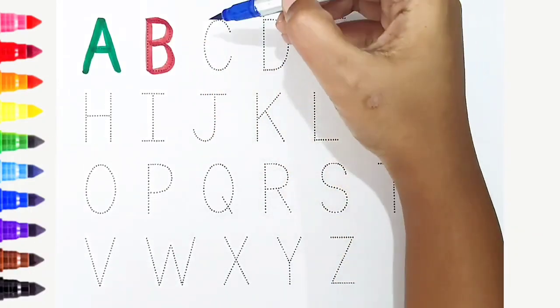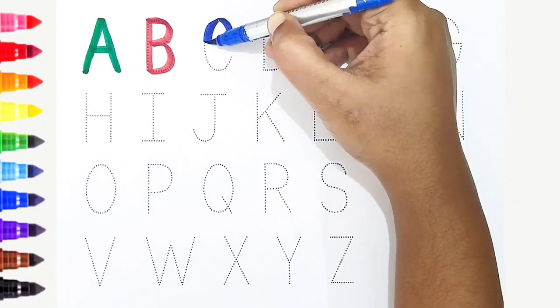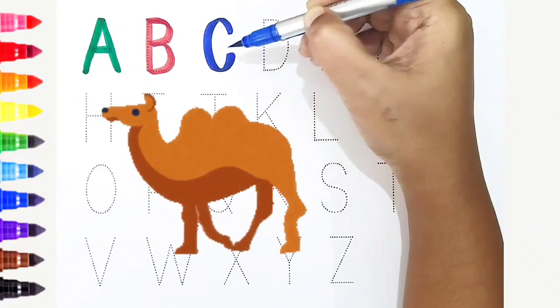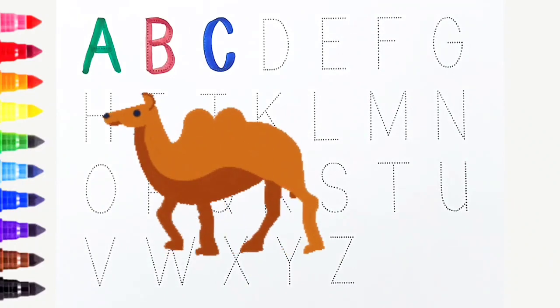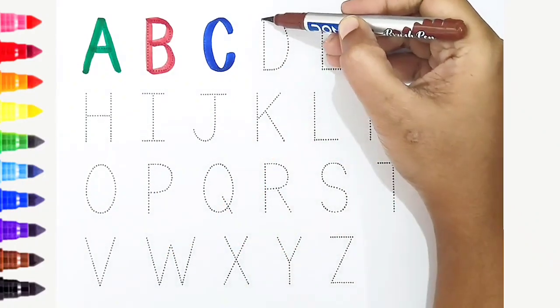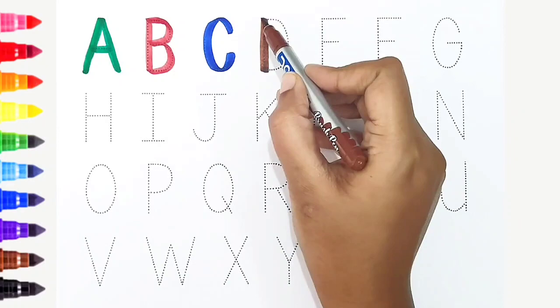C, dark blue color. C is for camel. D, brown color. D is for donkey.